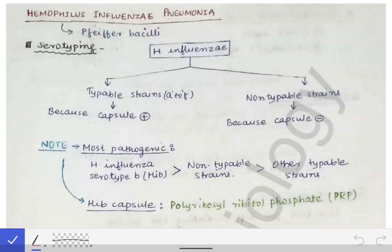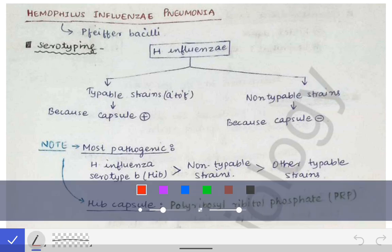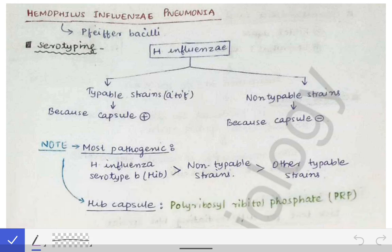Now we are going to talk about Haemophilus influenzae pneumonia. We have already talked about Streptococcus pneumoniae pneumonia, the pneumonia caused by the pneumococcus. Now it's about Haemophilus influenzae, which can also cause lower pneumonia.